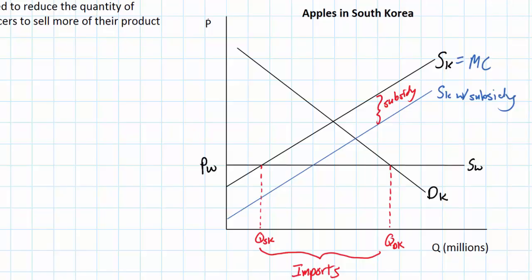But how does this impact the price and quantity demanded of apples in South Korea? Unlike other forms of protectionism — quotas and tariffs — there is actually not going to be a change in the price of apples when there's a subsidy for domestic growers. The world price PW is still lower than the domestic price with the subsidy, found at the intersection of SK with subsidy and DK. Due to the lower marginal cost of production, Korean apple growers are now willing and able to provide a greater quantity at the world price PW. So we end up with a new domestic quantity supplied.